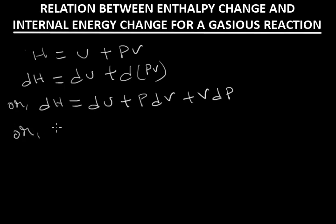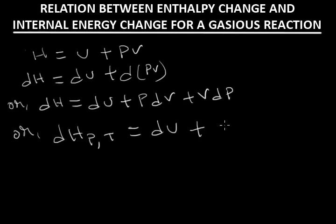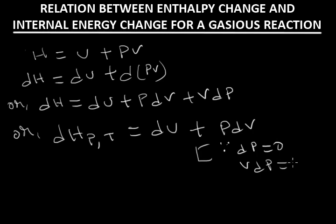Now, when pressure and temperature remain constant, we can write dH at constant pressure and temperature equal to dU plus P dV, because since dP equals zero, V dP equals zero. That means the equation becomes dH equals dU plus P dV at constant pressure and temperature.